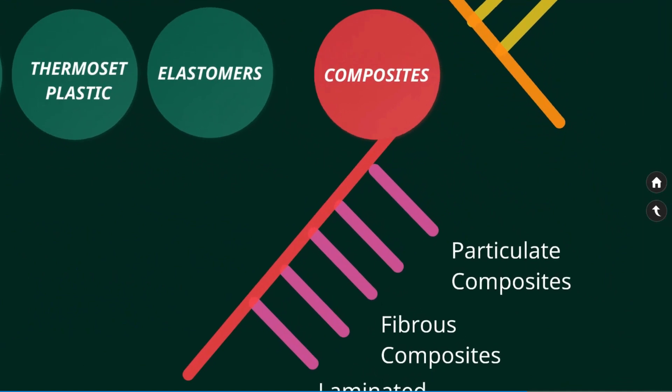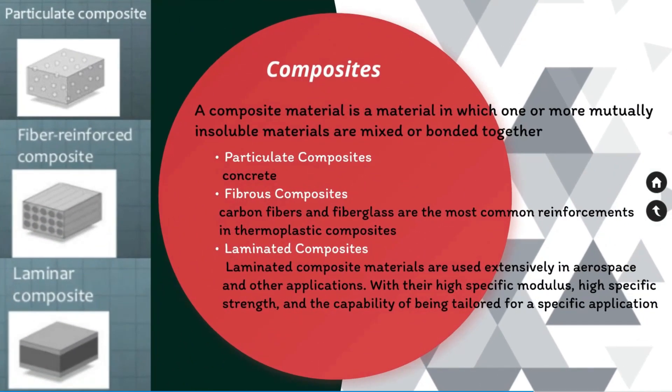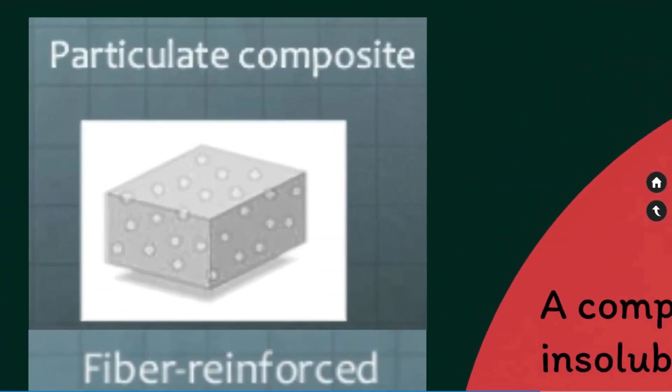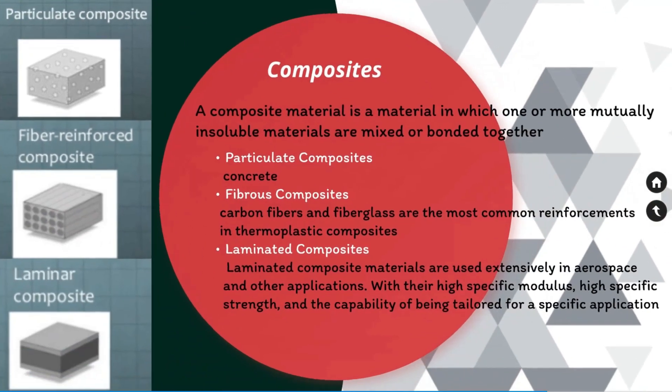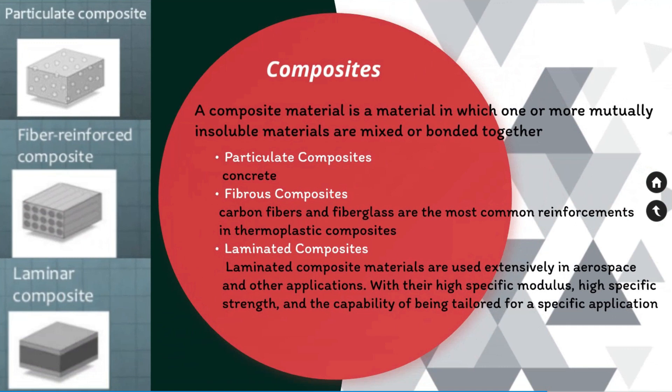A composite material is one in which two or more mutually insoluble materials are mixed or bonded together. The primary classes of composites are particulate composites, fibrous composites, and laminated composites. Particulate composites are created by adding particles of one material to another; the particles typically account for less than 15% of the total material volume. Concrete is an example of a particulate composite material.